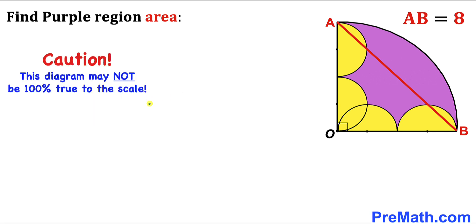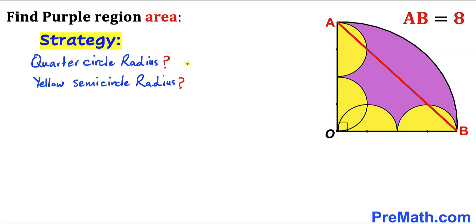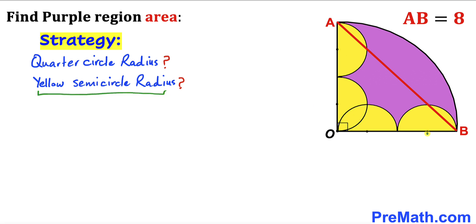Please keep in mind that this figure may not be 100% true to scale. Let's get started. Our strategy, since we are interested in calculating the area of the purple shaded region, is to calculate the radius of the quarter circle and the radius of the yellow semicircles as well.